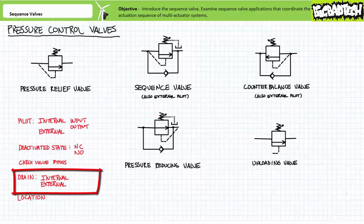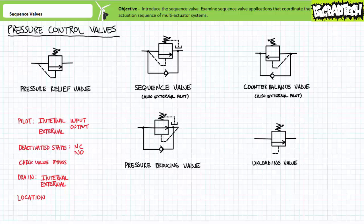Drain ports: some of these valves necessitate external drains, some of them don't. The ones with external drains, like sequence and pressure reducing valves, have pressurized secondary ports. The ones with internal drains, like pressure relief, unloading, and counterbalance valves, are intended to operate with a secondary port at low pressure, rendering an external drain unnecessary.